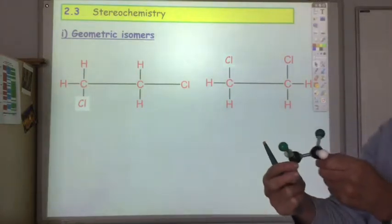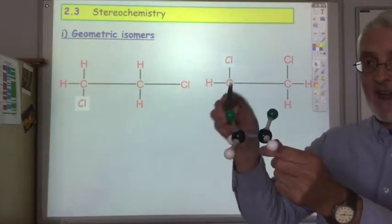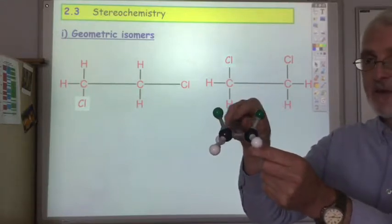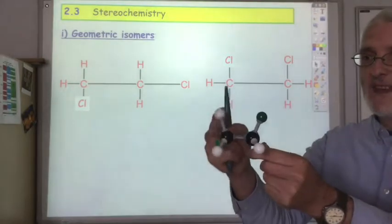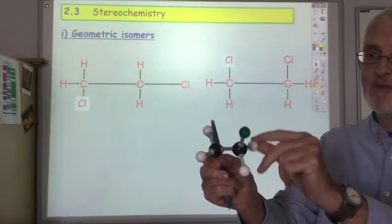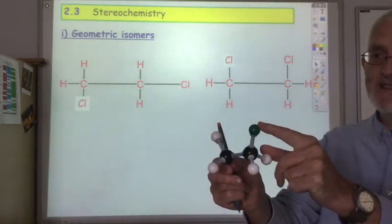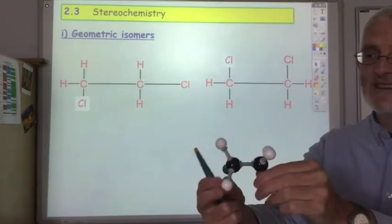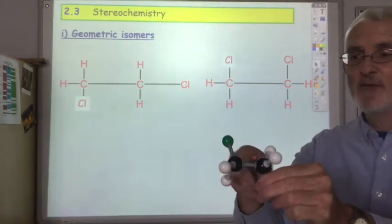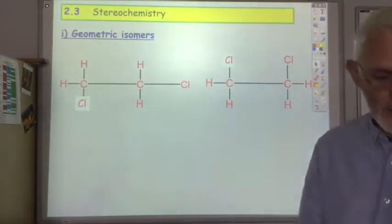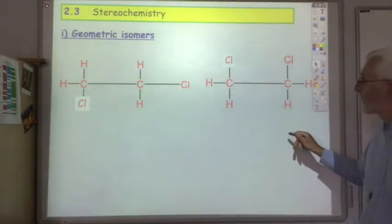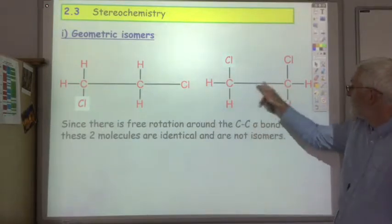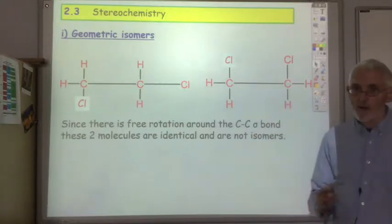For example, here the green balls represent chlorine atoms, the black is the carbon and the white is the hydrogen. But they rotate, so we have the chlorines sticking up the way, along the side, or sticking down in both cases. So because we have this rotation around the carbon-carbon single bond these are not isomers. Since there's free rotation around the carbon-carbon sigma bond, these two molecules are identical.